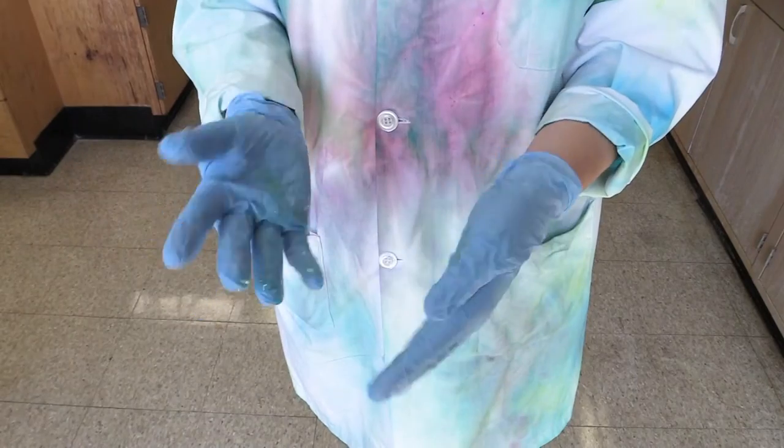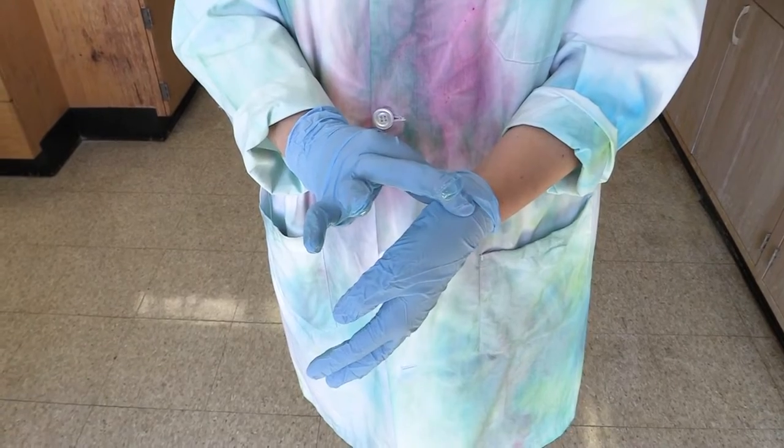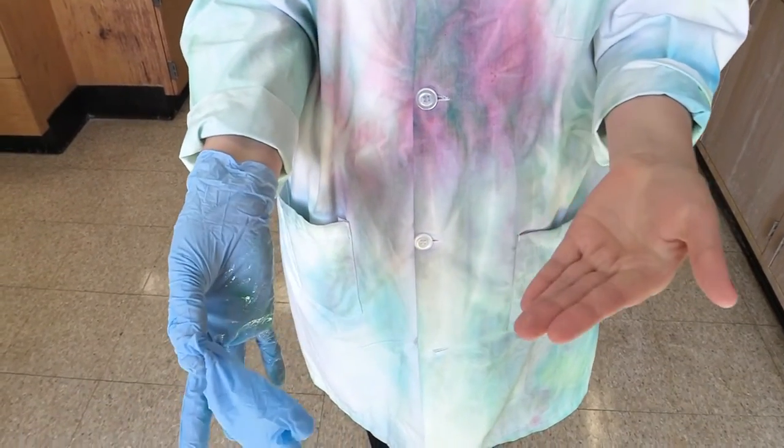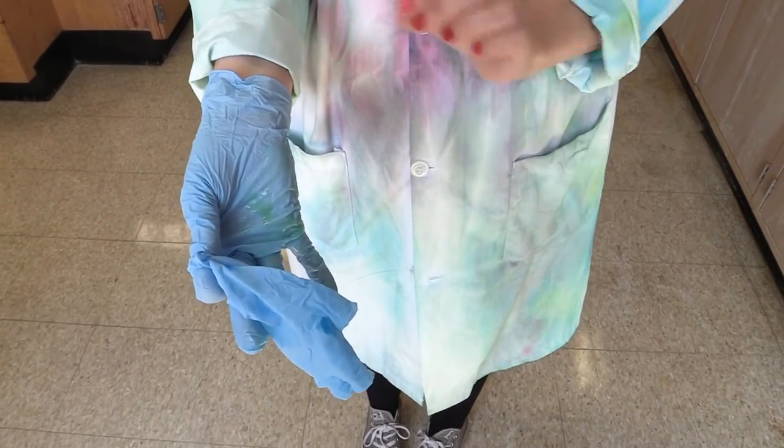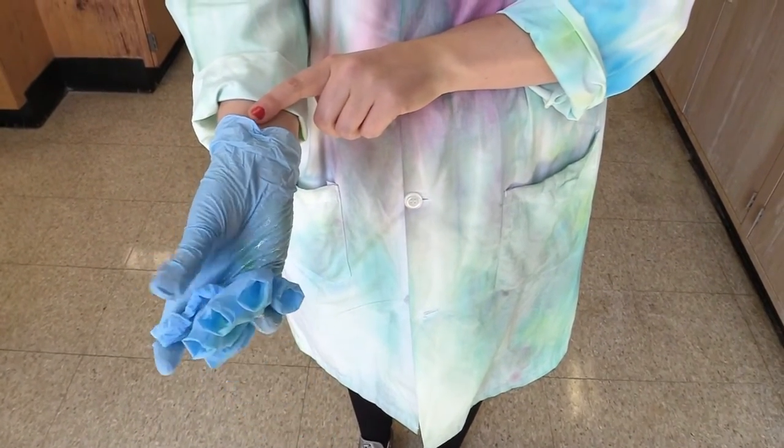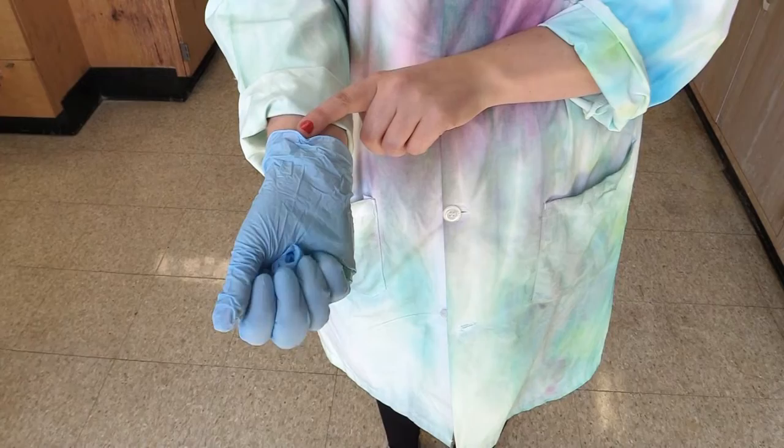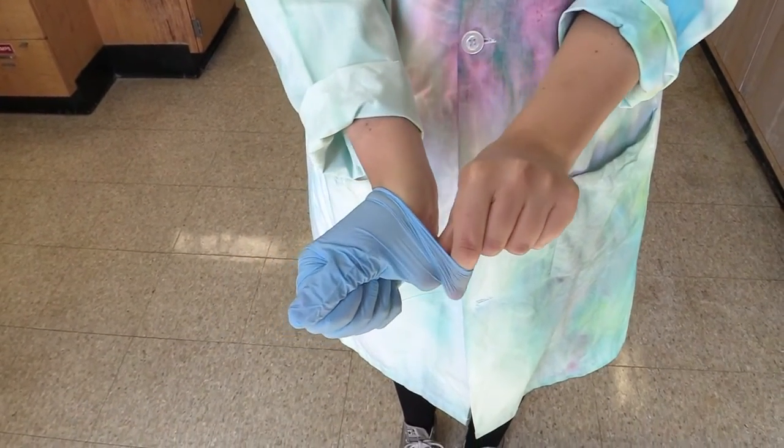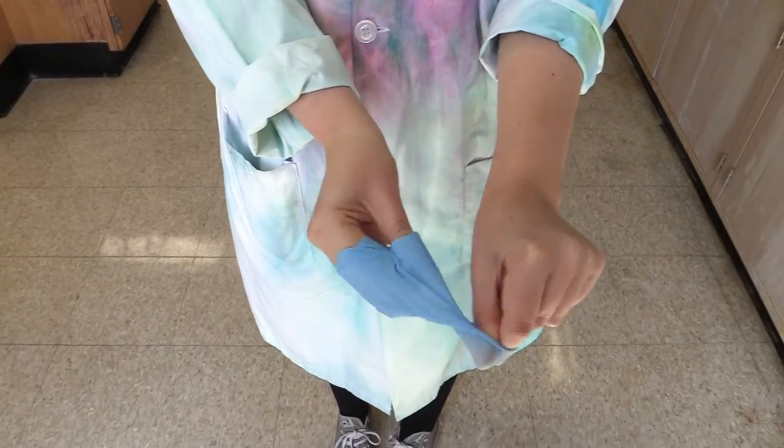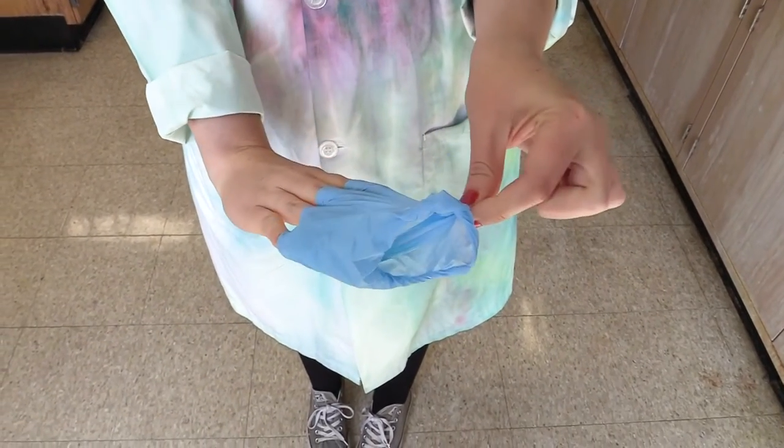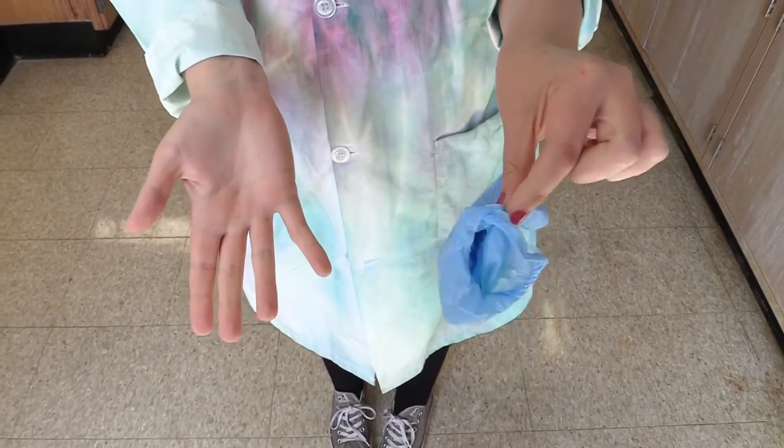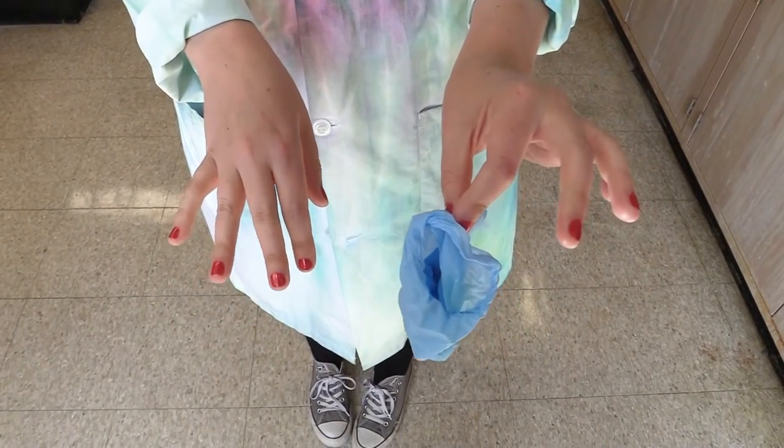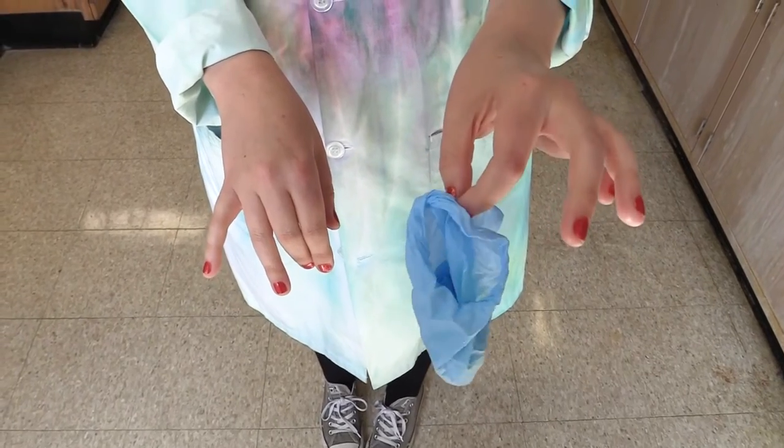When you go to take your gloves off, first pinch one of them somewhere around the wrist or at the base of your hand, and peel it off like this, turning it inside out as you go. Then, ball it up and hold onto it with your still-gloved hand. Next, scoop under the glove you're still wearing with your thumb or a finger, and peel the glove off again, turning it inside out as you go. This way, you're always touching the inside of the glove, never the outside. If you do this right, you'll package the first glove inside of the second.